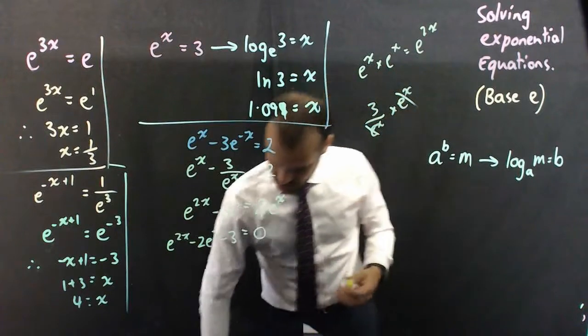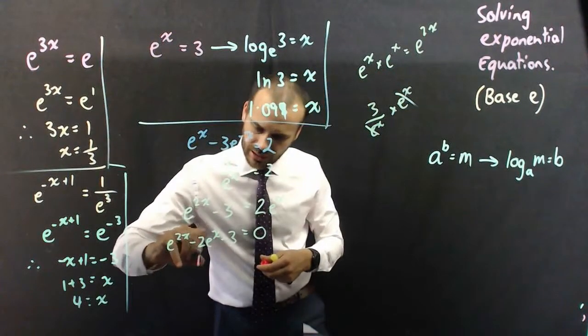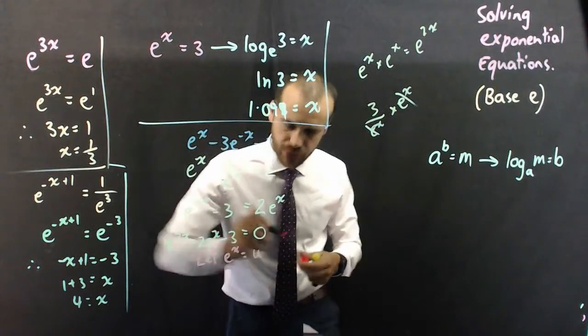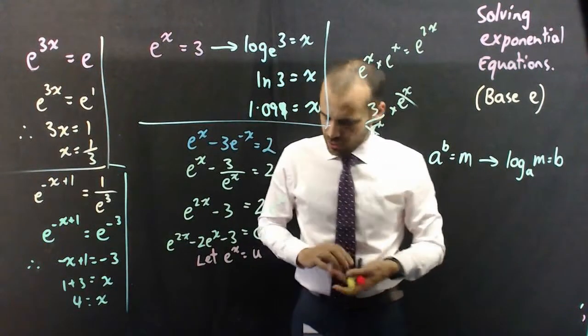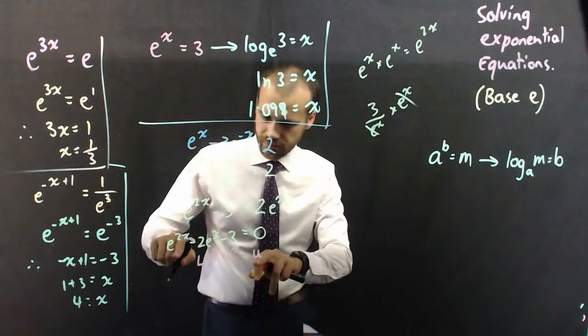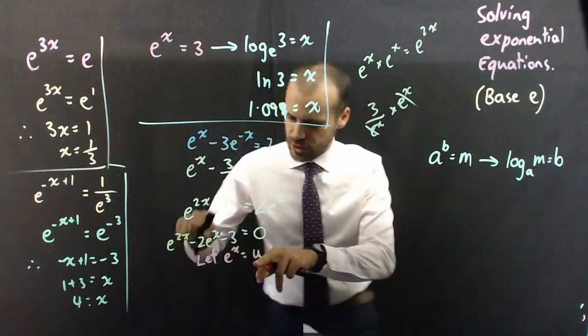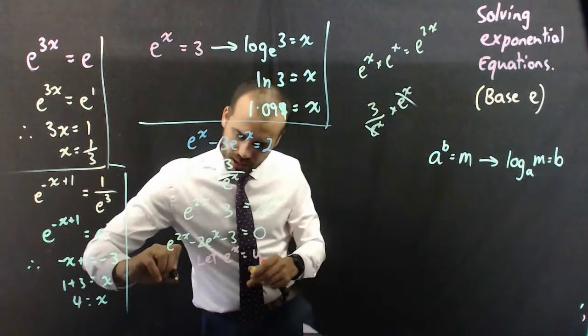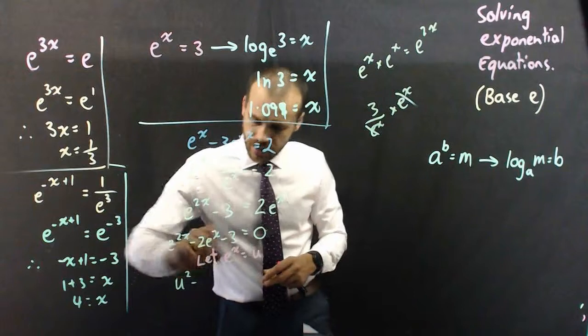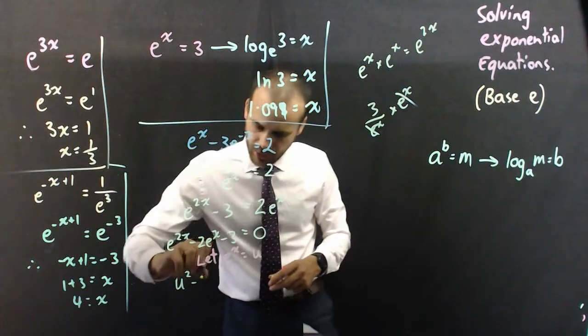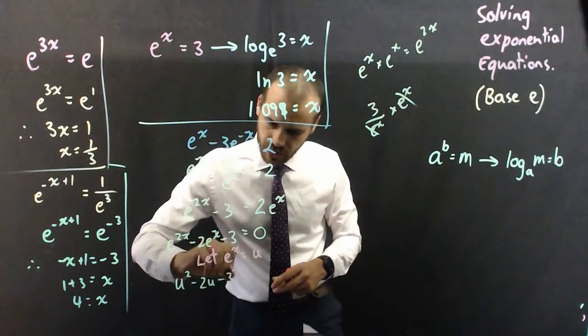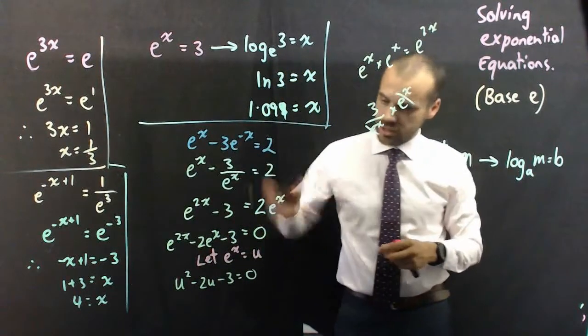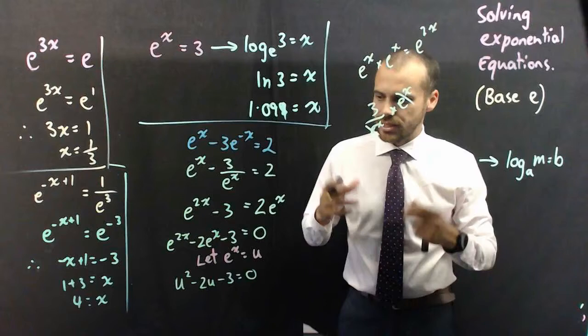Now, if you look here, and we say something like, let e to the x equal the letter u, we can now write that as, so this is e to the 2x. Another way to write that would be u squared. Now, if I let e to the x equal u, I've got minus 2u, and minus 3 equals 0. So, now I have a nice, neat little quadratic u squared minus 2u minus 3 equals 0.